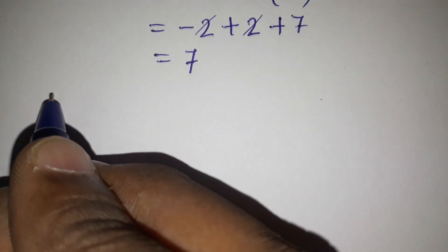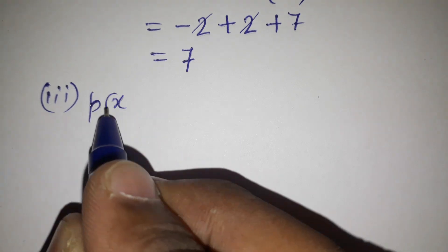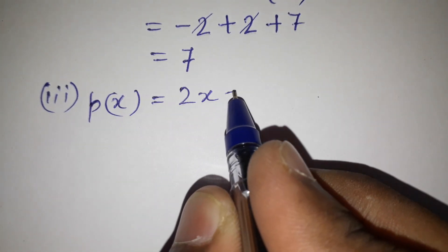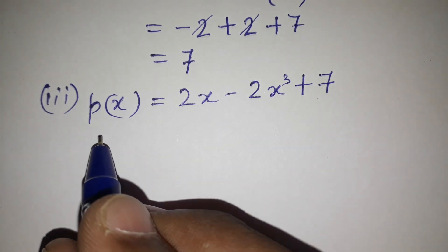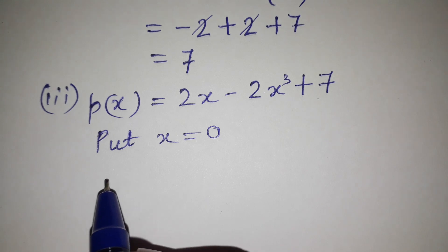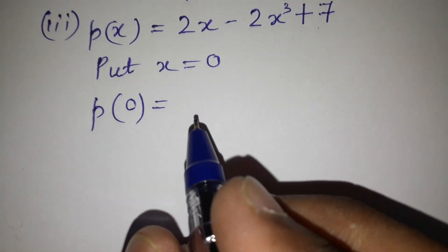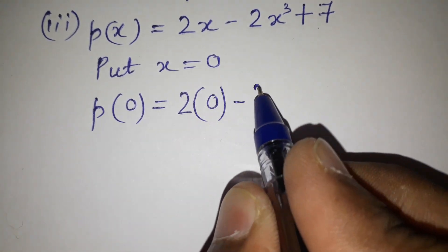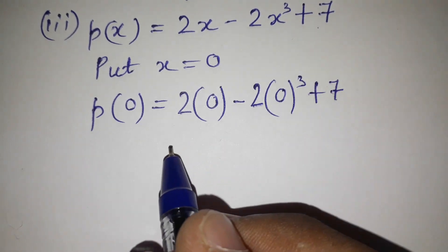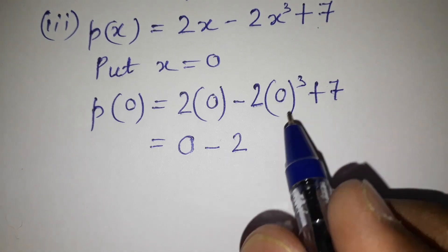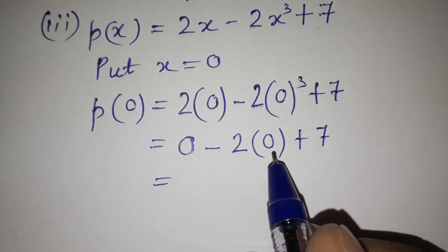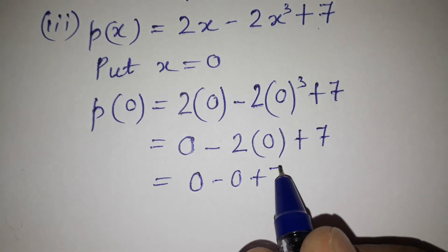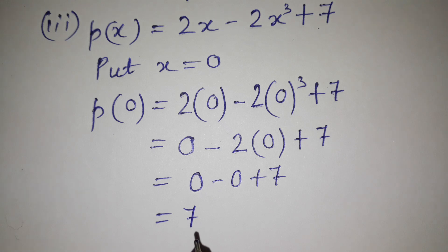For the third part, p(x) equals 2x minus 2x cube plus 7, and we put x equals 0. So p(0) equals 2 times 0 minus 2 times 0 cube plus 7. Since 2 times 0 is 0 and 0 cube is also 0, we get 0 minus 0 plus 7, so p(0) equals 7.